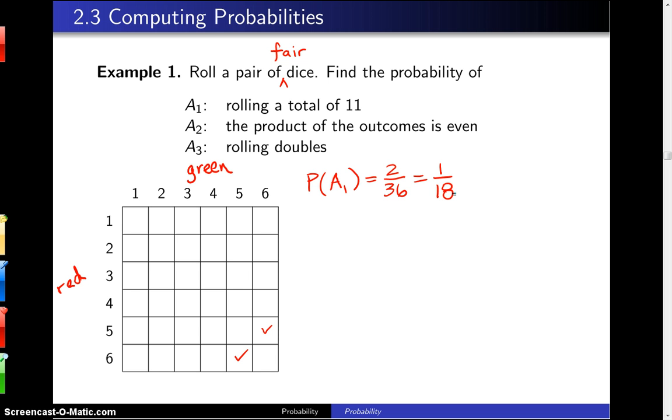Now the second event, A2, is that of getting an even product when you multiply the two outcomes. So the way to get an even product is the red die can be a 2, a 4, or a 6, and also the green die.